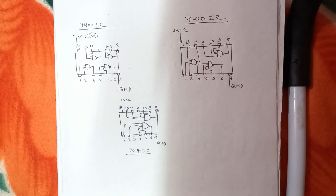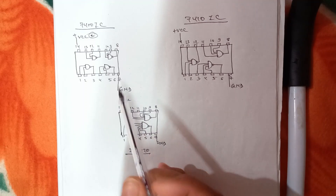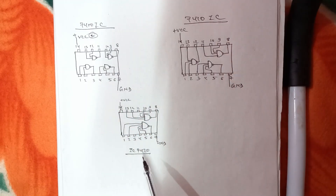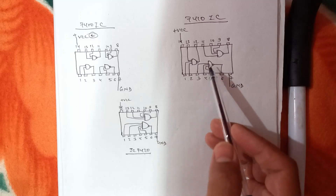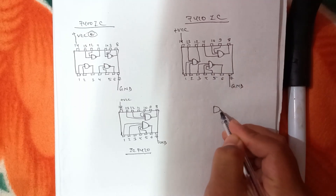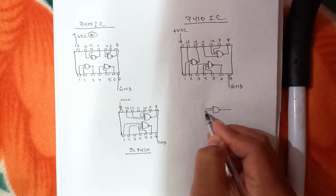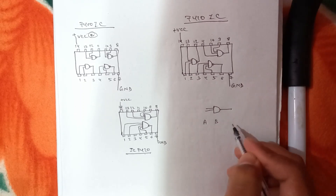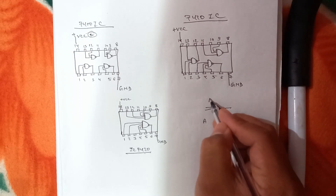Hello everyone, today in this video we are going to learn about the working of different ICs. We deal with the working of 7400, 7410, and 7420 ICs. But before that, we need to understand this type of gate, which is known as an AND gate. If A and B are inputs, Y is the output for this AND gate.